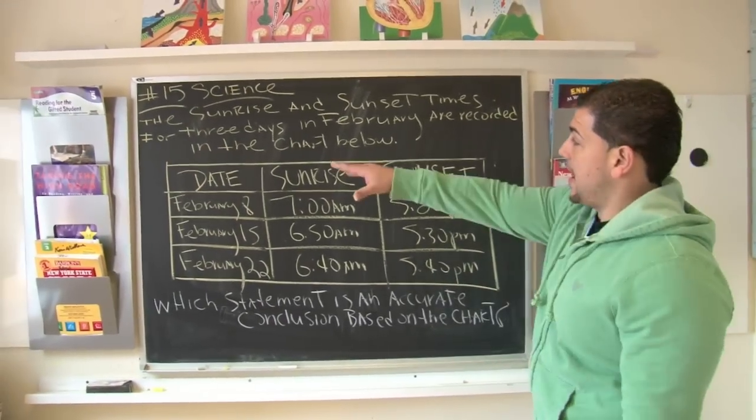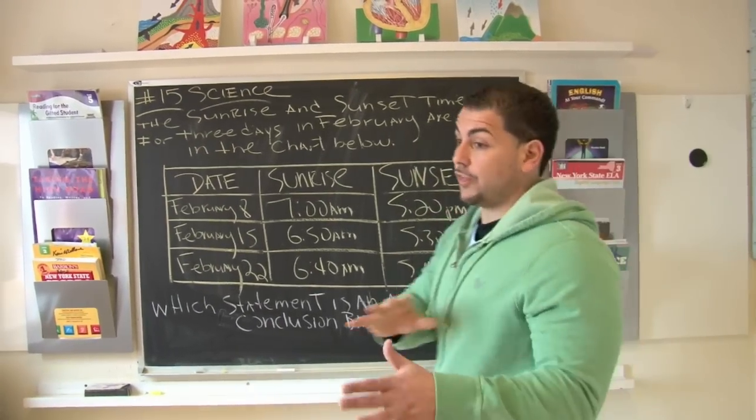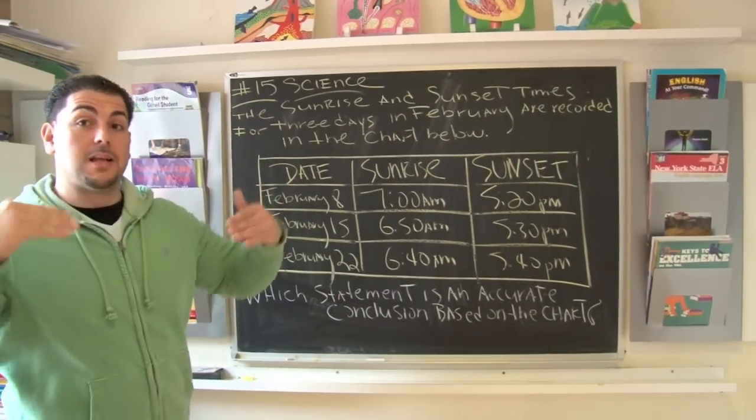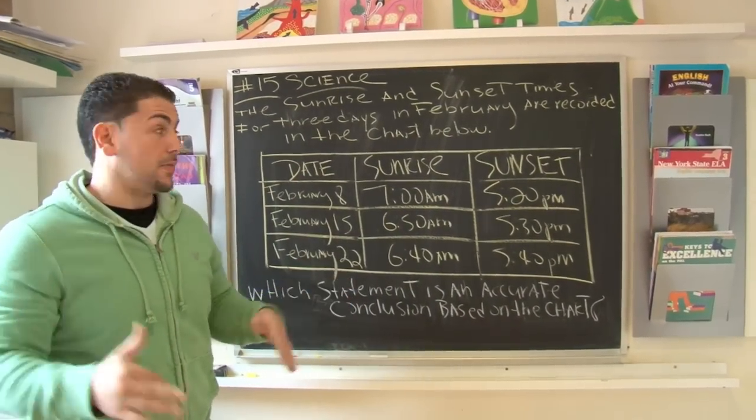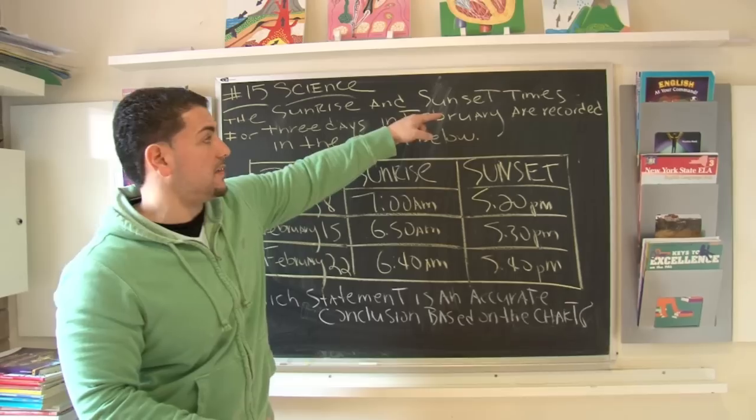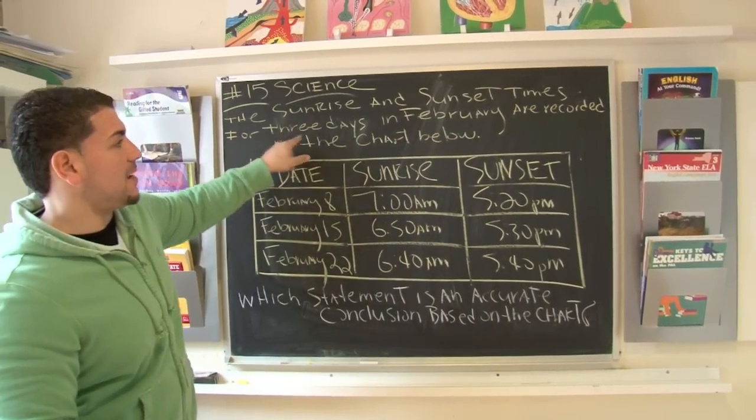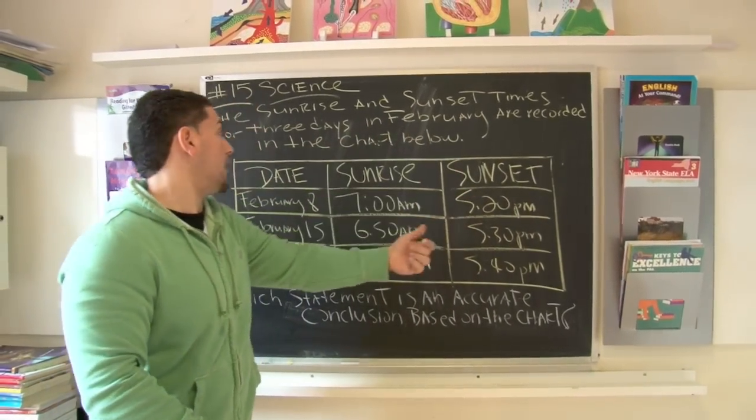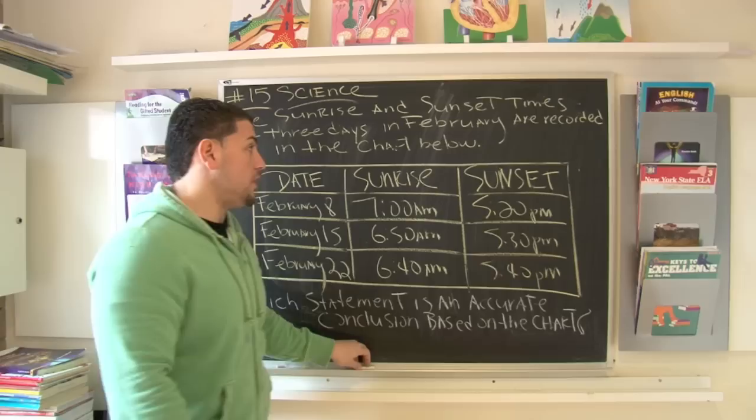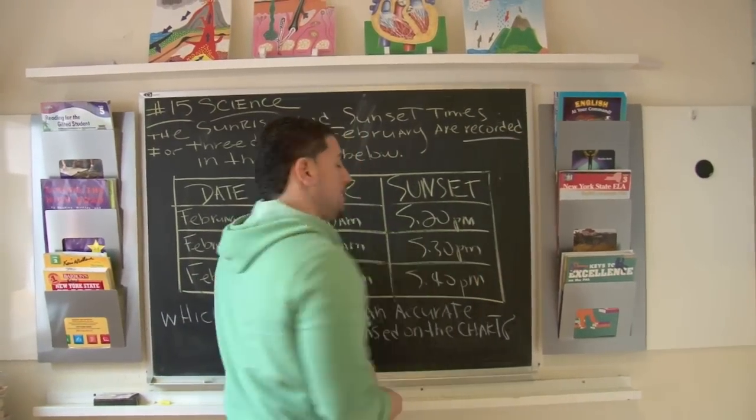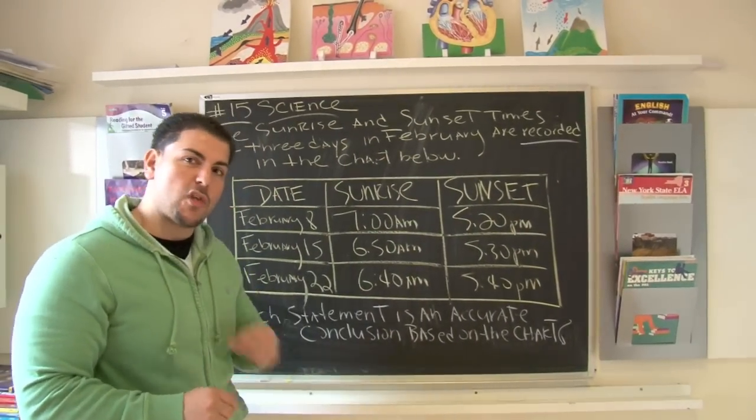The sunrise and sunset times - just so you know, sunrise means the morning time, sunset means when it's nighttime, like you have to go to sleep. The sunrise and sunset times for three days in February are recorded in the chart below. When they use the word recorded, it means to write it down. They keep a record of things.